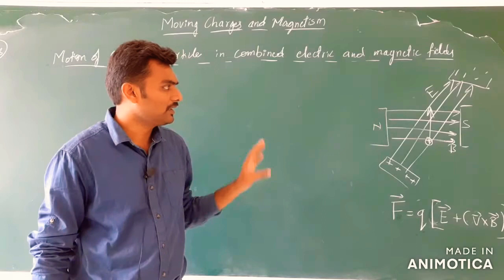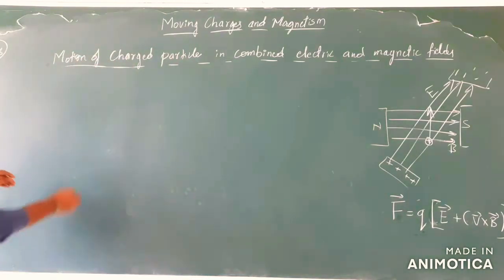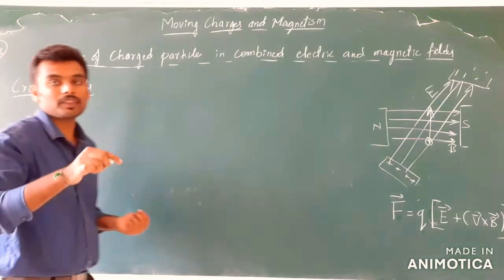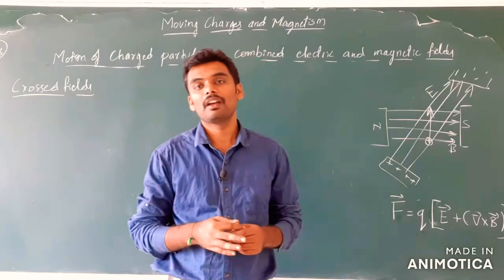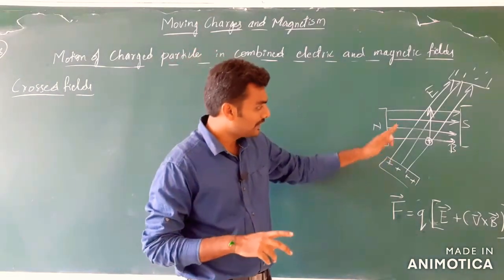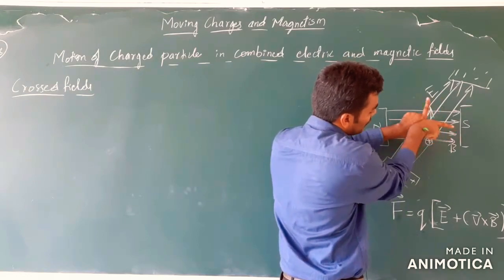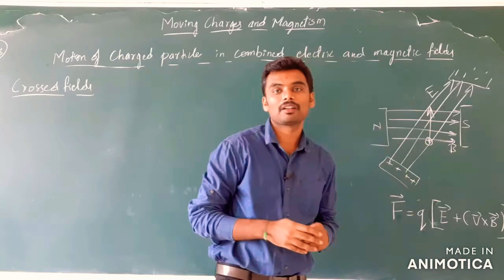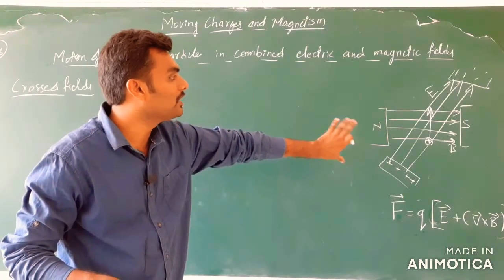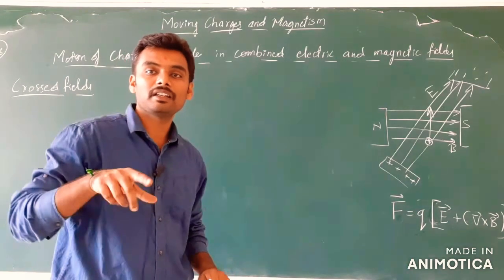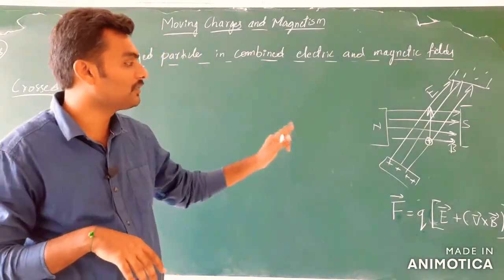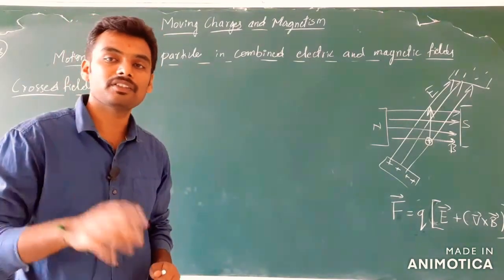Now we are going to define a new term called crossed fields. If the magnetic field and the electric field in a region are perpendicular to each other, then the field is called crossed fields. Here they are not perpendicular — the electric field is like this and the magnetic field is like this, there is a certain angle between them but not perpendicular. I want to make the electric field perpendicular to the magnetic field, and then the kind of field that is set is called crossed fields. If a region has both electric field and magnetic field perpendicular to each other, then the region is said to have crossed fields.